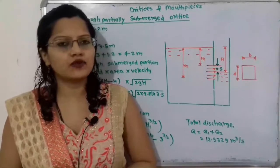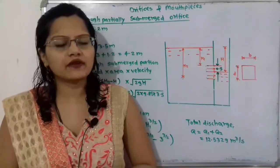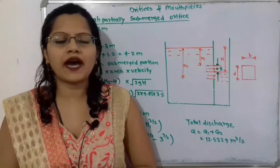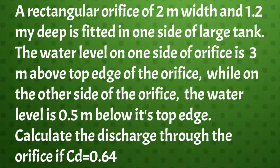Hello friends, this is Priyanka. Today we are going to solve a problem on orifice and mouthpieces. In this video we are going to find out what is the discharge through a partially submerged orifice. The given problem: a rectangular orifice of 2 meter width and 1.2 meter depth is fitted in one side of a large tank. The water level on one side is 3 meter above the top edge of the orifice, while on the other side the water level is 0.5 meter below the top edge. Calculate the discharge through the orifice if Cd = 0.64.